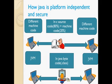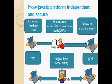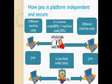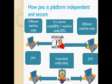To understand how Java is platform independent and secure, consider a platform dependent language like C. When a C compiler compiles a .c file, it produces an object file which is a combination of 80 percent source code and 20 percent machine code. This machine code is different for different machines, so one cannot run the same file on every machine.